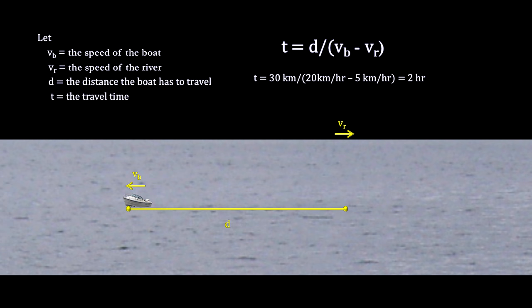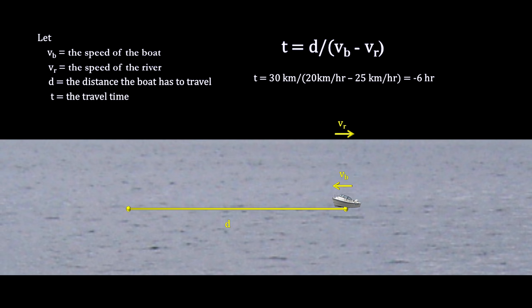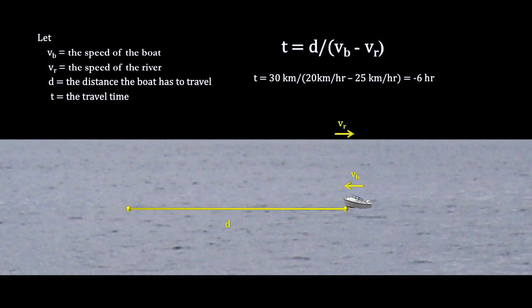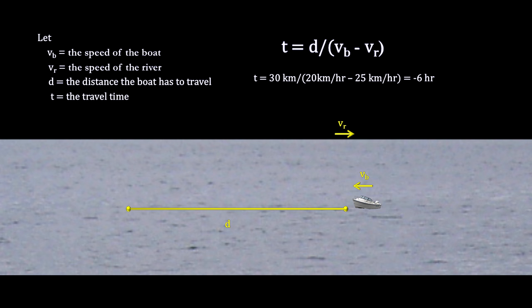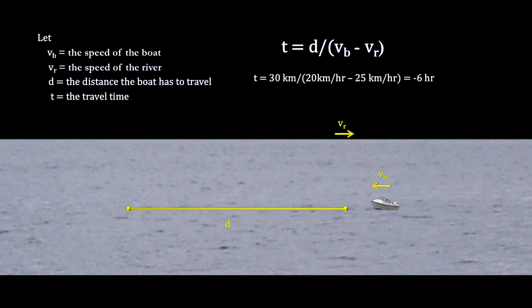But what if the current is greater than the speed of the boat, say 25 kilometers per hour? Then the equation gives us negative time. Is time running backwards? Absurd.